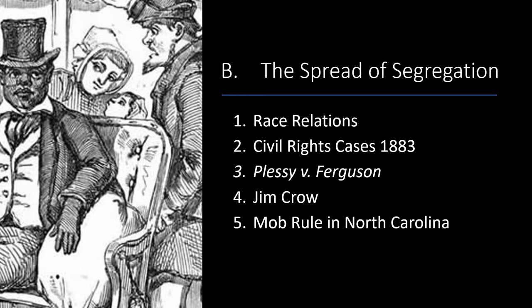The lone dissenting judge, John Marshall Harlan, argued that even if many white Americans in the late 19th century considered themselves socially superior to Americans of other races, the United States Constitution was colorblind and could not permit any classes among citizens in matters of civil rights. Here's the irony: Harlan was born into a slave-holding family from Kentucky. This ruling brought about the Jim Crow laws and made legal segregation the norm throughout the Southern states.